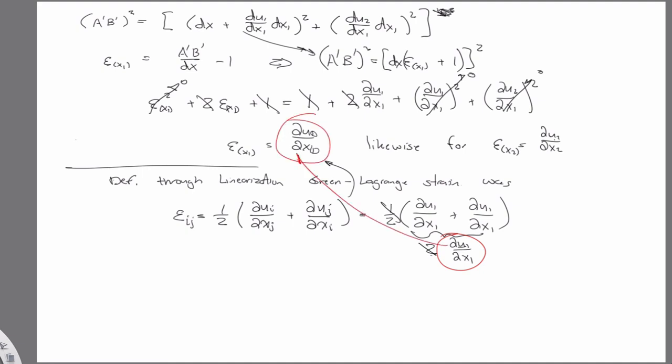So this is where, this should clarify where the one-half comes from. It's for consistency with the linear theory. Because we could have defined a strain, I mean, a strain is a concept that we define. And we chose to make it two times that function of the change in length that involved the deformation gradients.